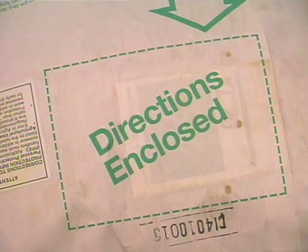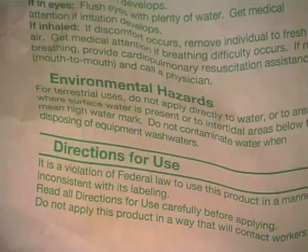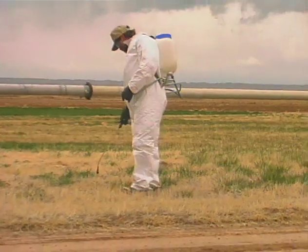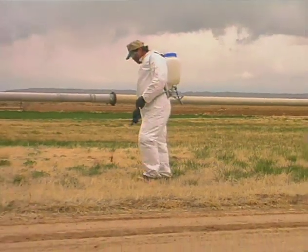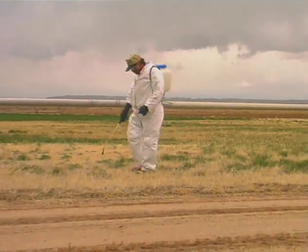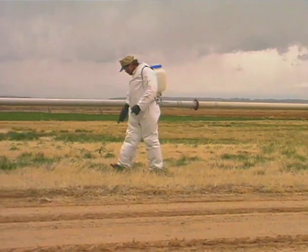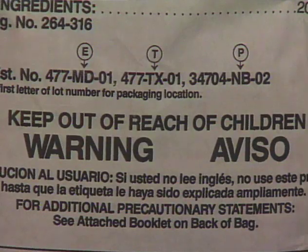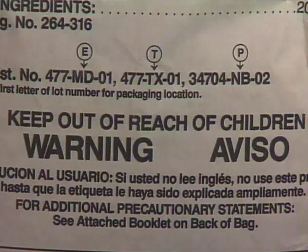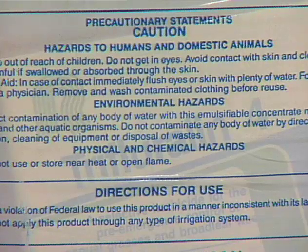The single most important step in using pesticides is to always read the label and follow the directions on the label exactly. You are responsible by law for any damage caused by pesticides to people or property. By reading the label on the pesticide container, you will have all the information you need to protect yourself and others.